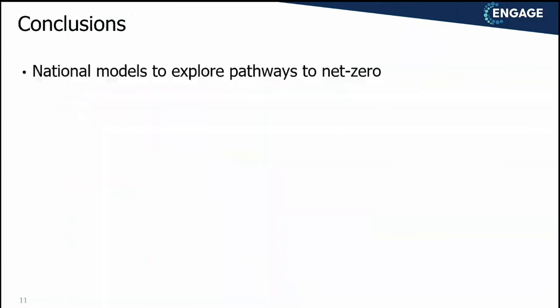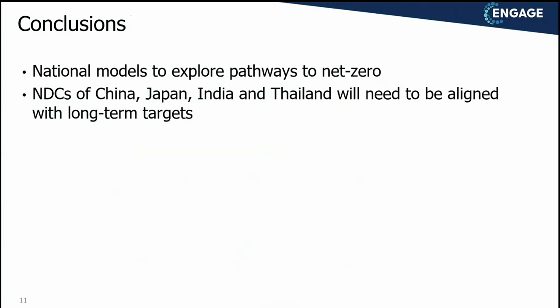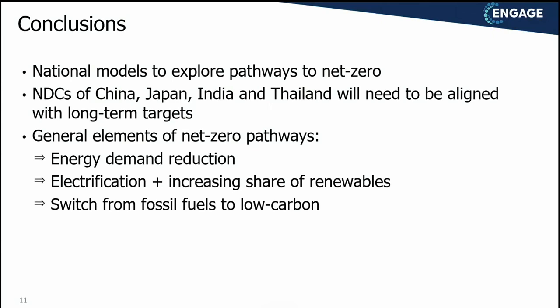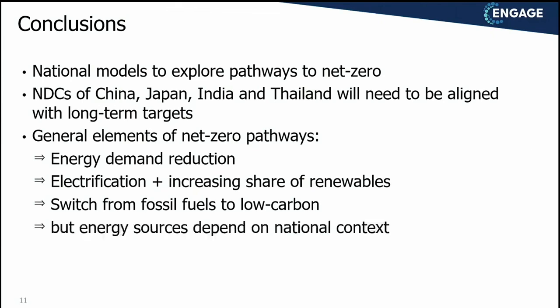Some conclusions: national models can be used to explore pathways to net zero. The Engage modeling team has made a really attractive set of national scenarios consistent with global model runs, which can be used to look into country-specific data with high legitimacy because they were developed by national teams. The NDCs of several countries will still need to be aligned with long-term targets — the 50% emission reduction runs are clearly not in line with the NDCs yet. There are general elements common to net zero pathways, but there are also clear differences visible between countries.